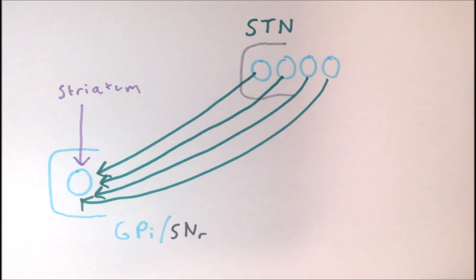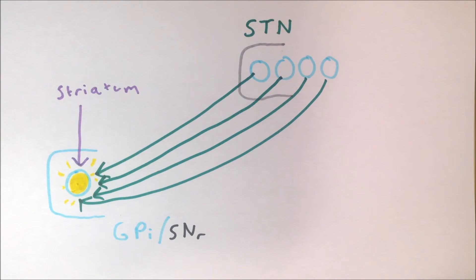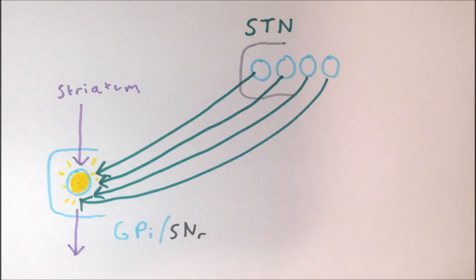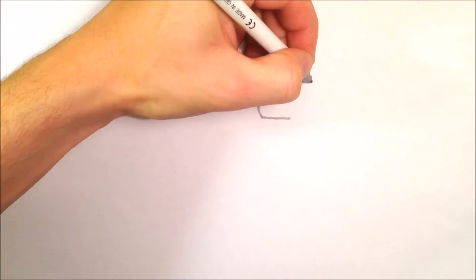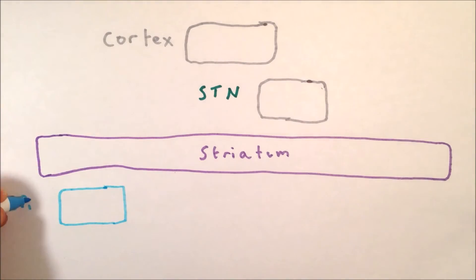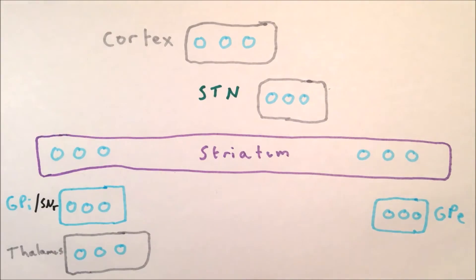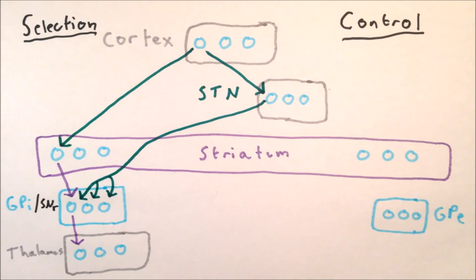However, the number of excitatory inputs keeps increasing. Eventually, the inhibitory input won't be enough to prevent the cell from firing, no matter how strongly the salient loop is activated, and its action won't be selected. In order to prevent this happening, the control pathway is needed to balance the level of excitation and inhibition.